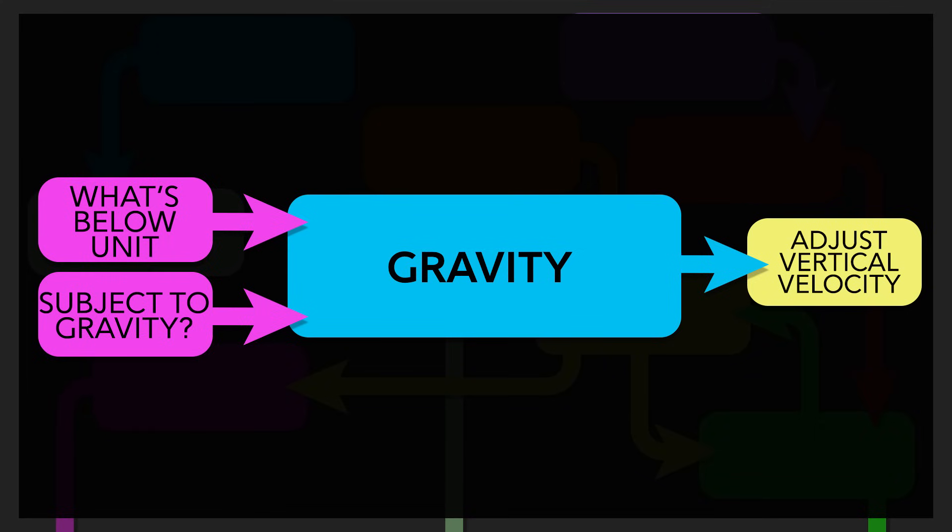Gravity for instance. The input is looking at what is under the character. Is it ground, air, water, etc? Also is the character flying or defying gravity somehow? After evaluating these conditions, the output is to adjust the character's vertical velocity, either making them fall downward or stay where they are if they are on top of a solid surface.